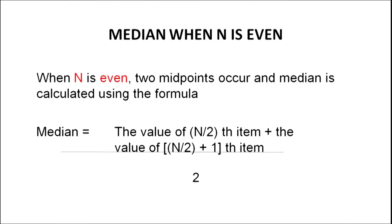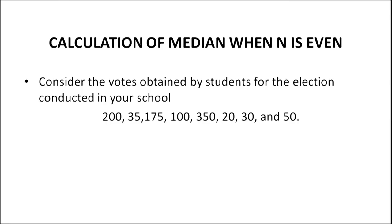When N is even, two midpoints occur, and median is calculated using the formula: Median = (value of N/2 th item + value of (N/2 + 1) th item) / 2.